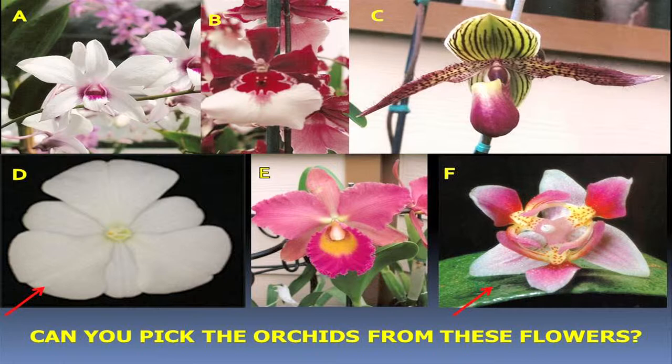This brings me to the next question. Of these six pictures, which of them are orchids? It's a trick question — they're all orchids. But you will notice that the two at the bottom are a little funky looking because they don't have bilateral symmetry; they actually have radial symmetry. This one on the left has three petals, and that one on the right has three lips. So, why is that?